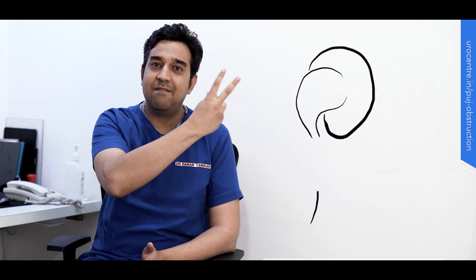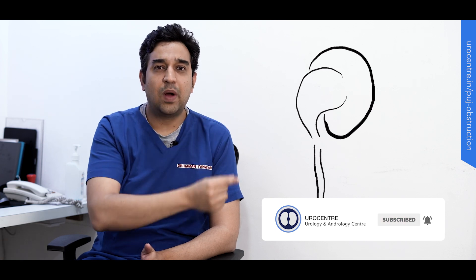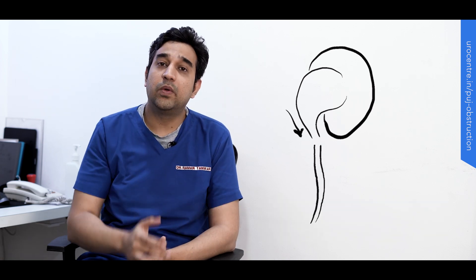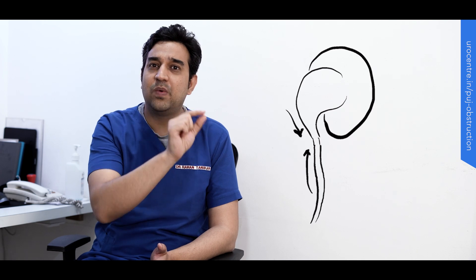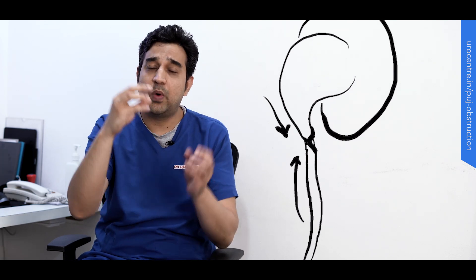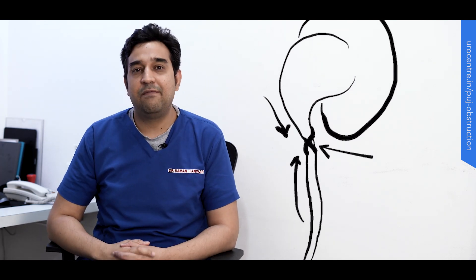As we can see, this is our kidney and the kidney has a pelvis. This is the area where the funnel starts to form and then it joins the lower part which is called the ureter. This junction where the ureter and the pelvis are joining together is called the Pelvi-Ureteric Junction.